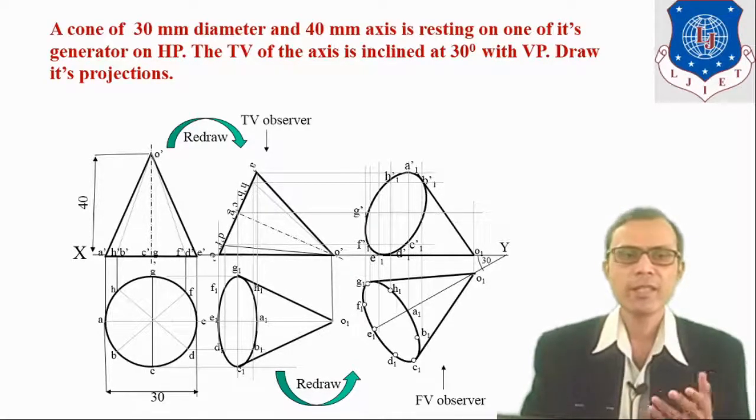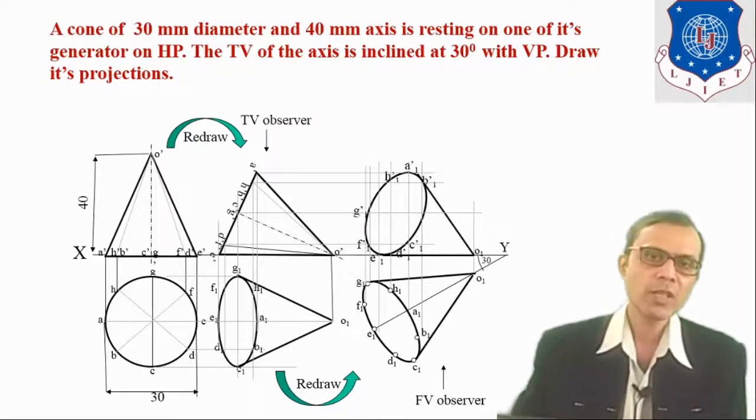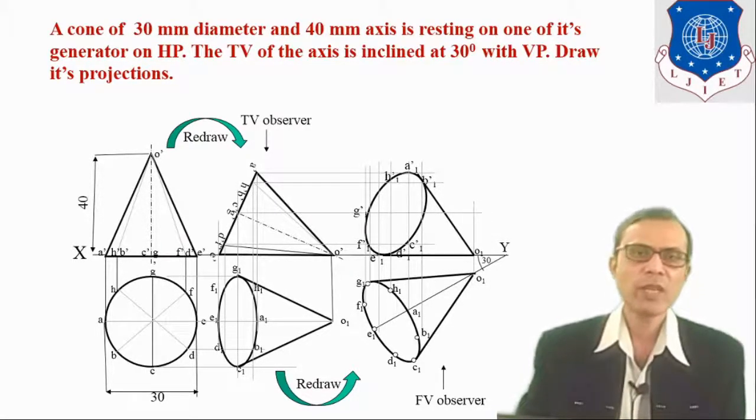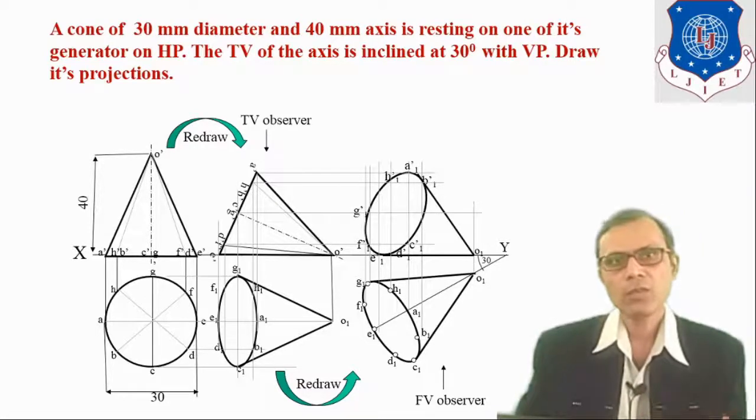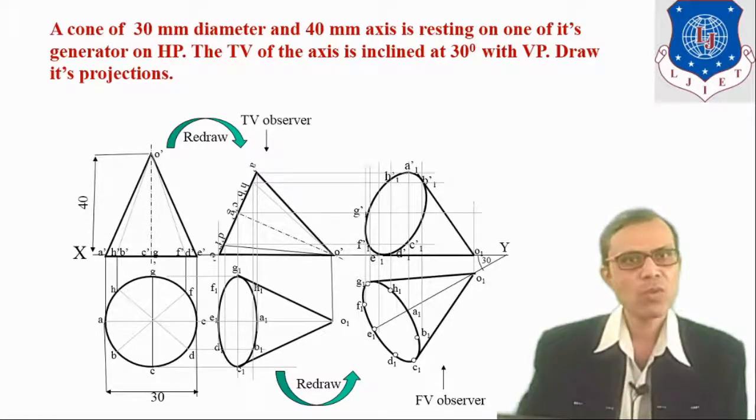So these are the general procedural steps to follow while drawing the projection of a solid. It is a right circular cone, but in place of a right circular cone, another solid may also be given. Thank you very much for watching.